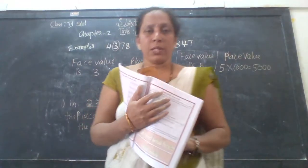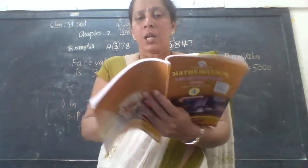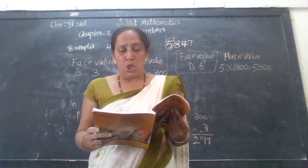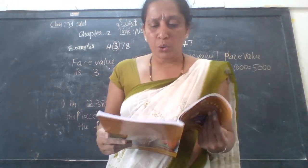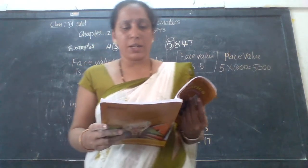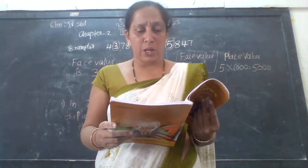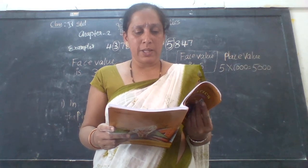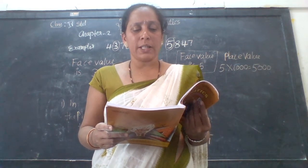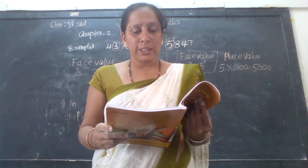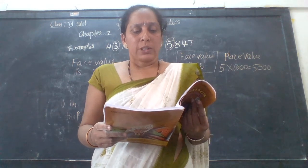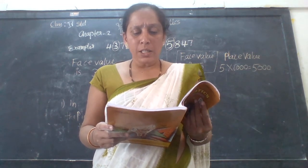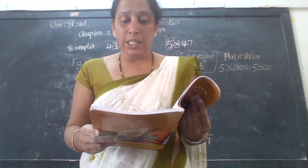See here — place value. You already know the place value of numbers. You also know how to read and write numbers according to their place value. Observe these examples: 4173, 4237, 4314, 3125. Identify the place value of 3 in each example.